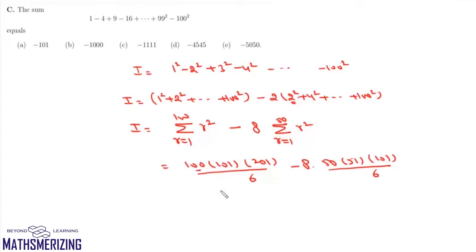Now we'll take 100 into 101 by 6 common, so it will be 100 into 101 divided by 6, and here we'll get 201 minus 4 into 51.